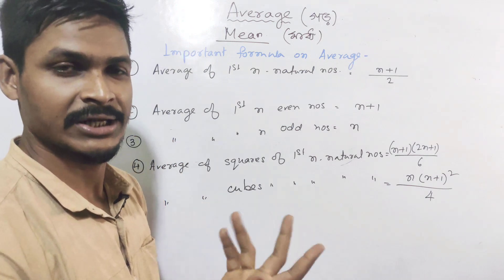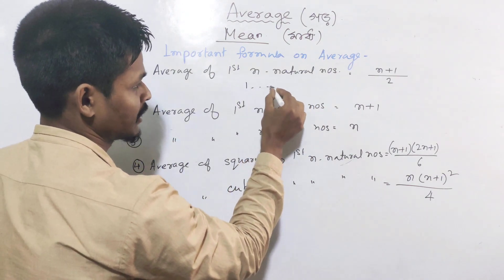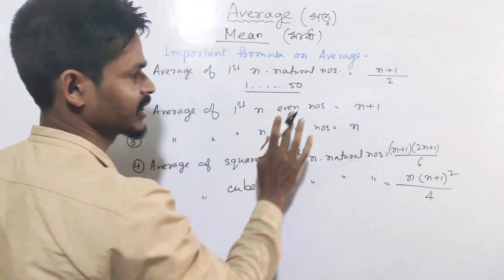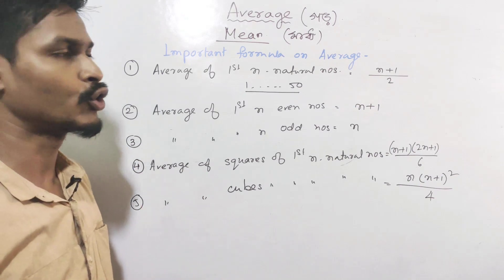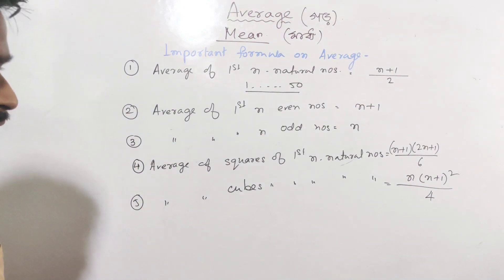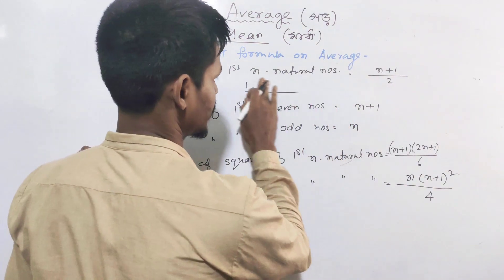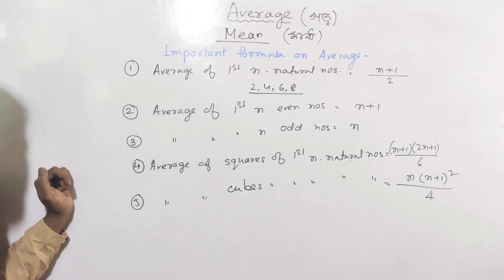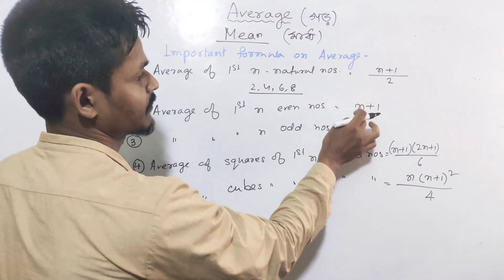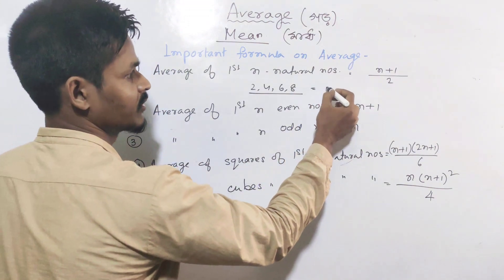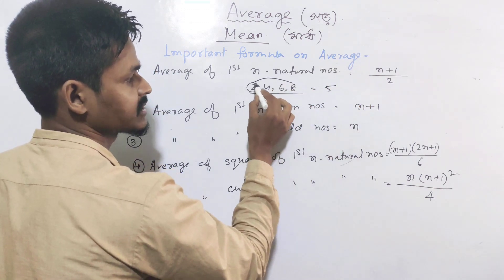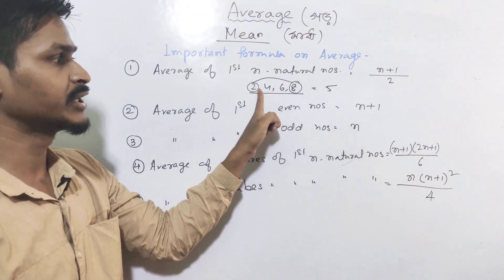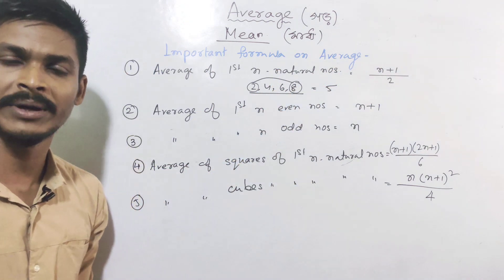For 1 to 50, average is 25.5; same formula applies: first plus last divided by 2. For n even numbers, the formula is n plus 1. For example, first 4 even numbers: 2, 4, 6, 8 — average equals 2 plus 8 divided by 2 equals 5, which matches n plus 1 where n equals 4, giving 5.